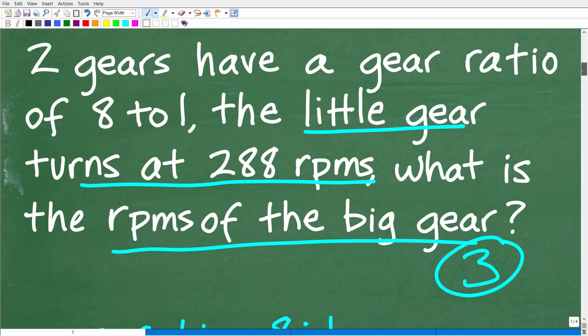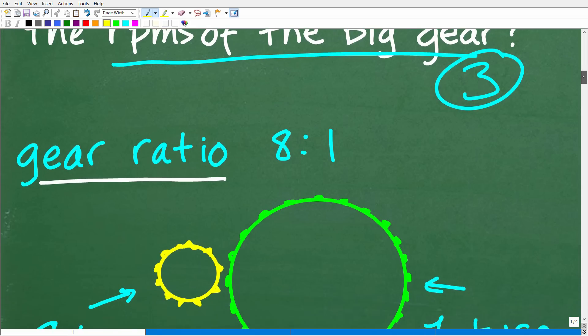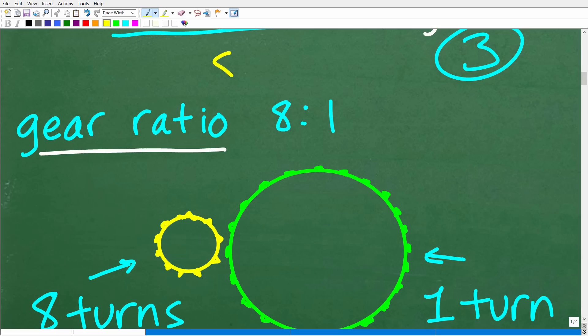If you have an eight to one gear ratio, we have to turn this small gear eight times to get this big gear to turn one time. So that is what a gear ratio is. Now, when we think about this, we have to go back to our problem and we're saying, okay, what information do we have? Well, we know that the little gear turns at 288 RPMs. So in that one minute, that little gear turned 288 times. How many times did it turn that big gear? So once you understand a ratio, let me just make something clear here. The ratio is given to us as eight to one.